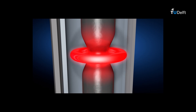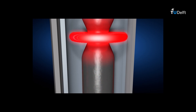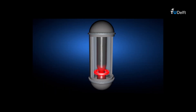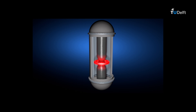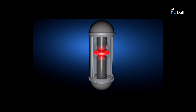As the molten zone is moved along the polysilicon rod, the single crystal ingot grows as well. Many impurities remain in and move along with the molten zone. During the process, intentionally nitrogen is added, which improves control of micro defects and improves the mechanical strength of the wafers.